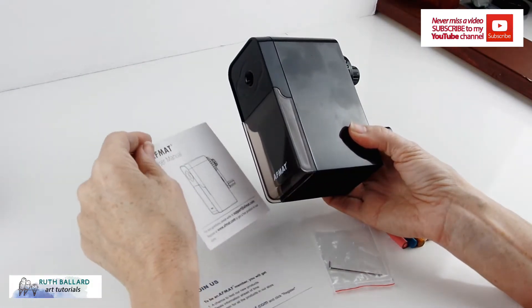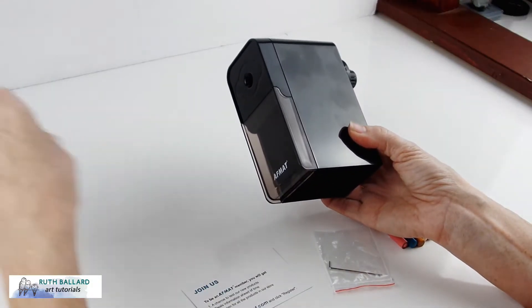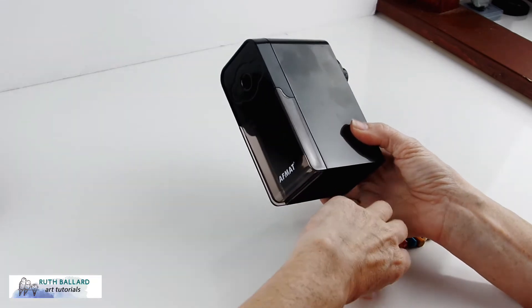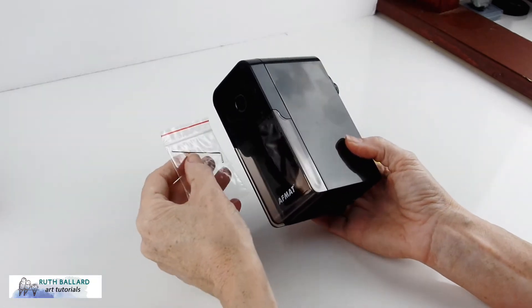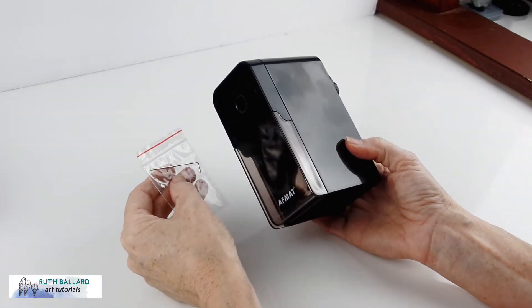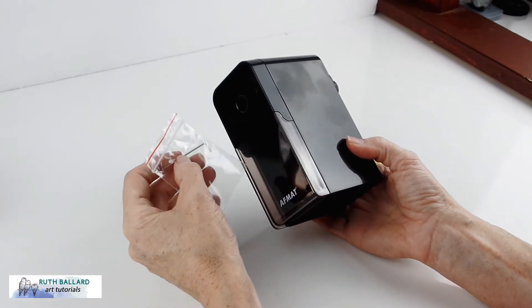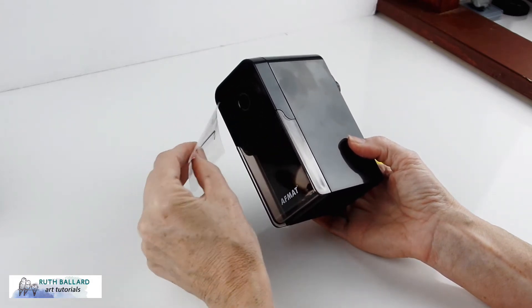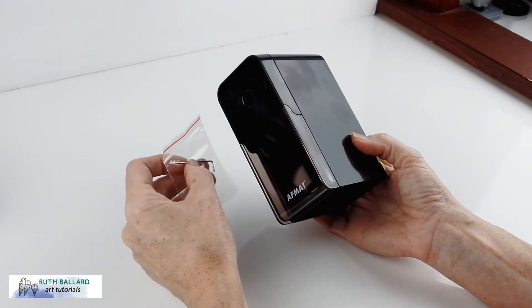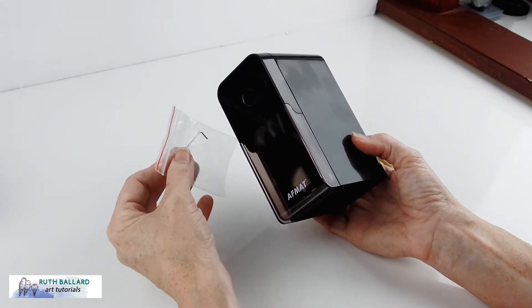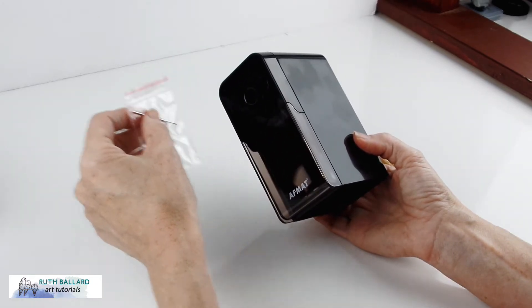It has a very small user manual, a little business card, and this little thing in here that looks like an Allen wrench. I can only imagine it's for if a pencil lead gets stuck and you have to fish it out.